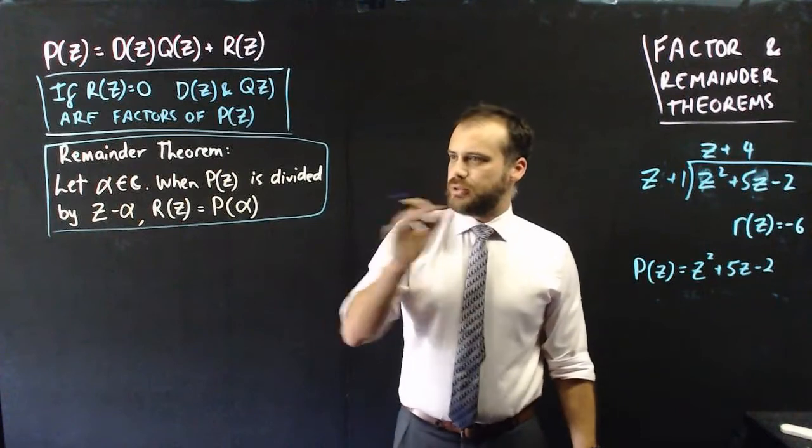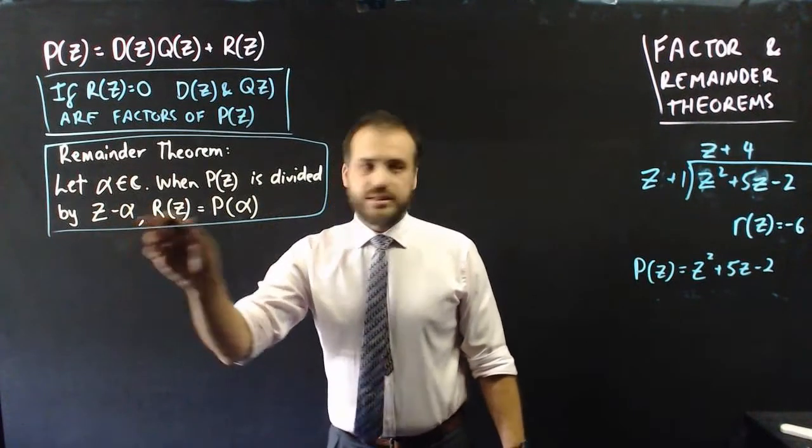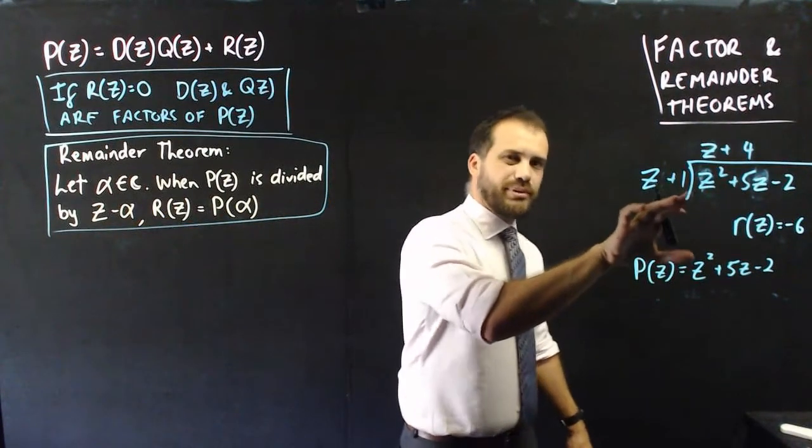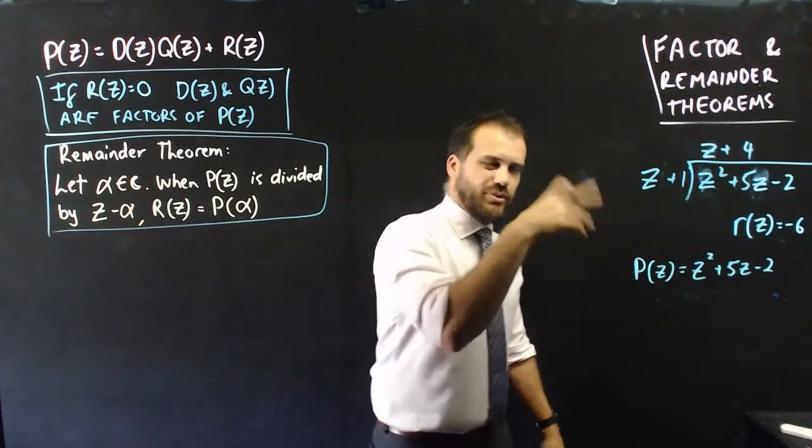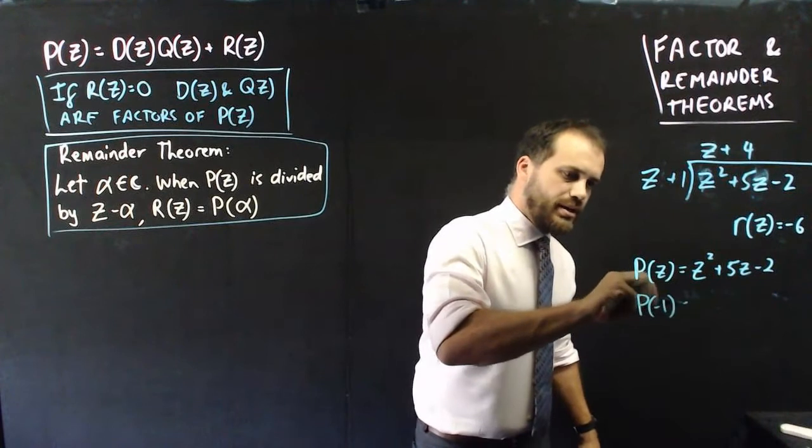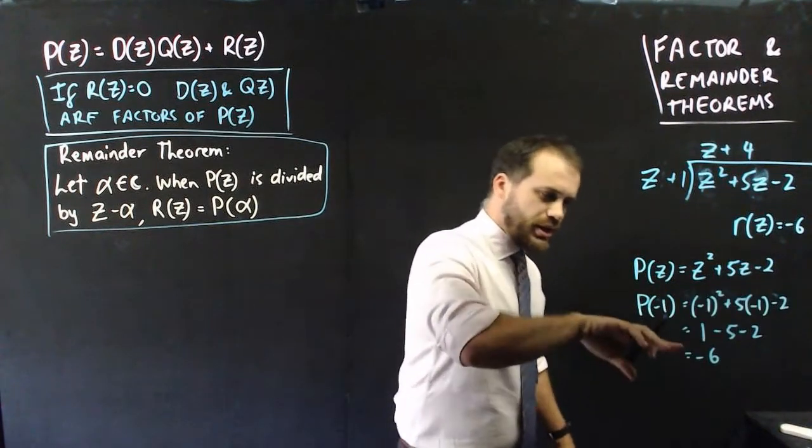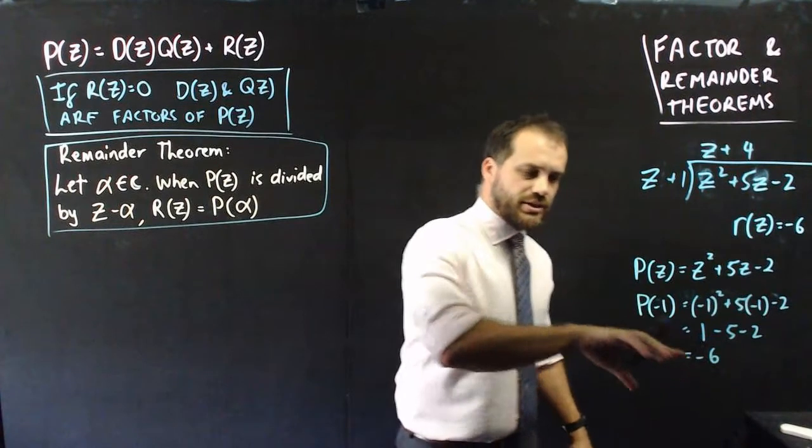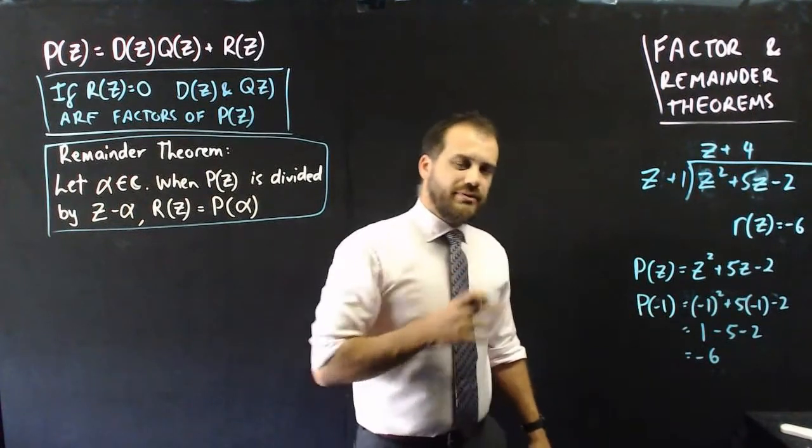Now, you need to be careful here because it is divided by z minus alpha. So if I'm dividing by z plus 1, then my alpha is not 1, it's negative 1. So let's find out what P negative 1 is. No surprises here. The answer is negative 6. So P negative 1 is negative 6.